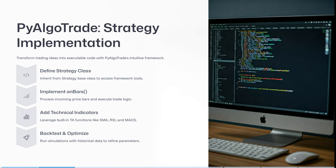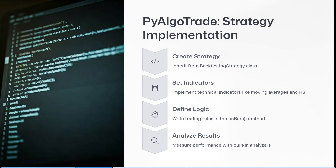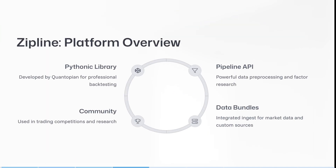PyAlgoTrade also has a backtest and optimization option. You can run simulations with historical data for more refined parameters, inherit from backtesting strategy classes, implement technical indicators like moving averages and RSI, and write trading rules on the on-bar method. You can also measure performance with its built-in analyzers.